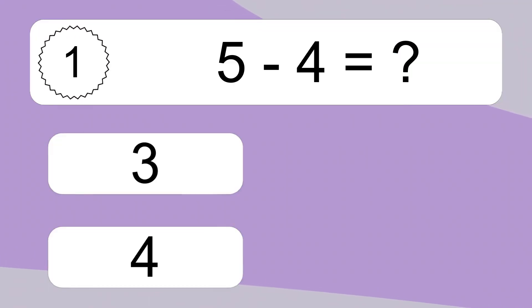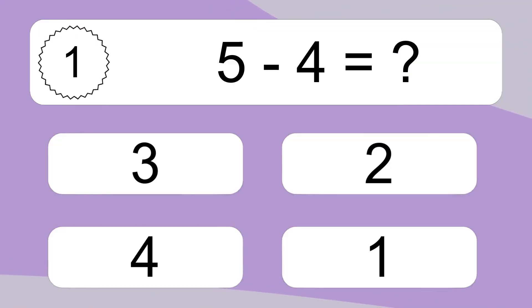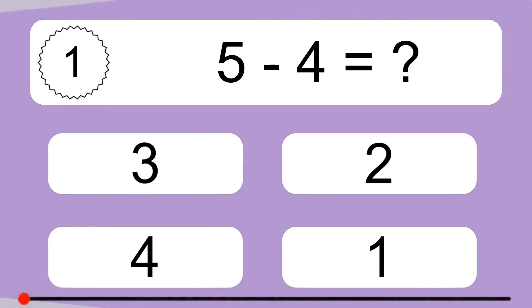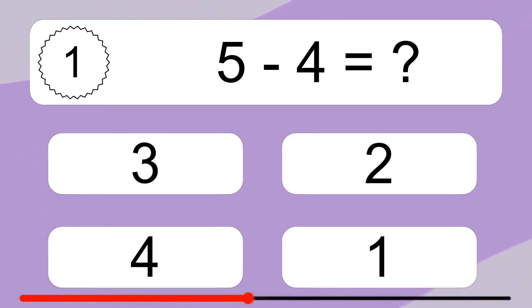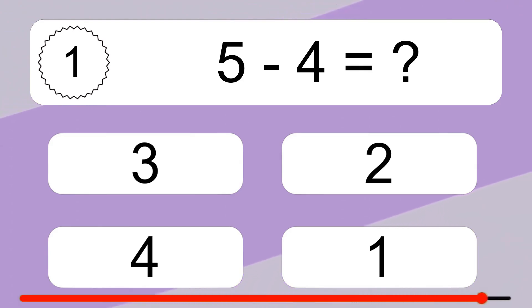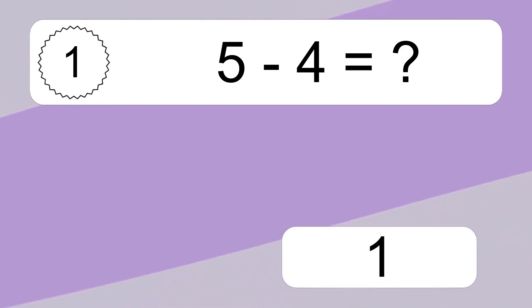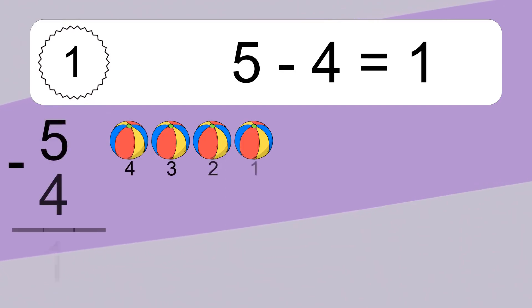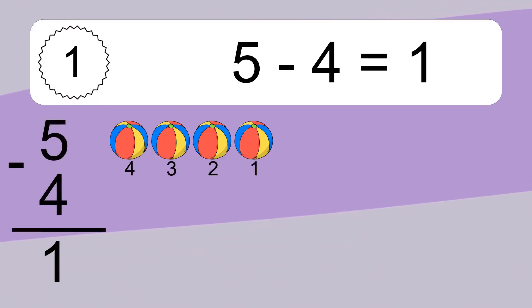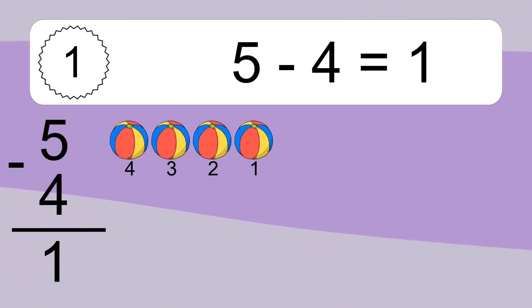5 minus 4 equals what? 5 minus 4 equals 1. Let's count it: 4, 3, 2, 1.